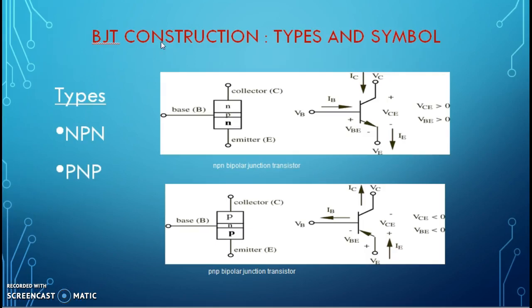In BJT construction, there are two types, NPN and PNP, and the different symbols of NPN transistor and PNP transistor. As we see here, there are three terminals of BJT: emitter, base, and collector.